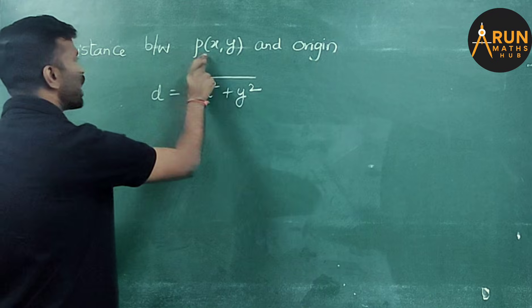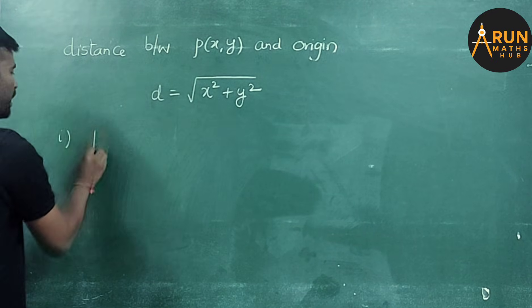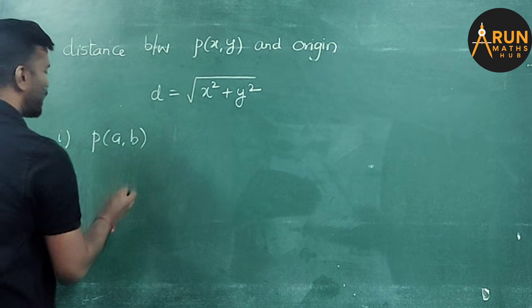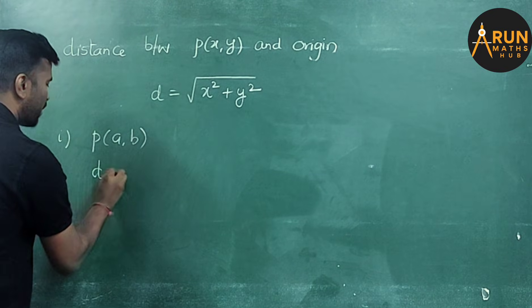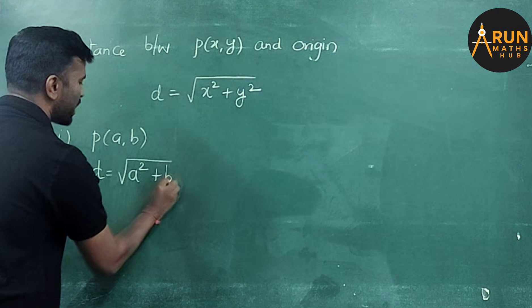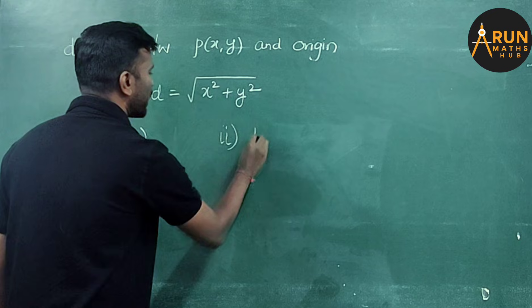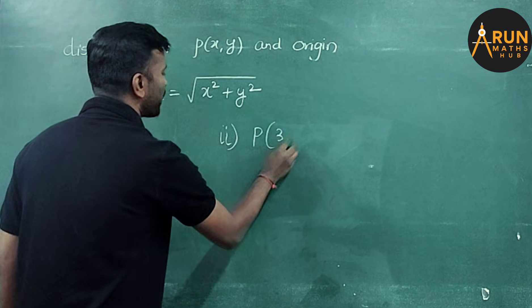In the examination, instead of P of x comma y, if they ask P of a comma b, what will be the distance formula? d equals square root of a square plus b square. What if instead of variables, they give any value like 3 comma 4?